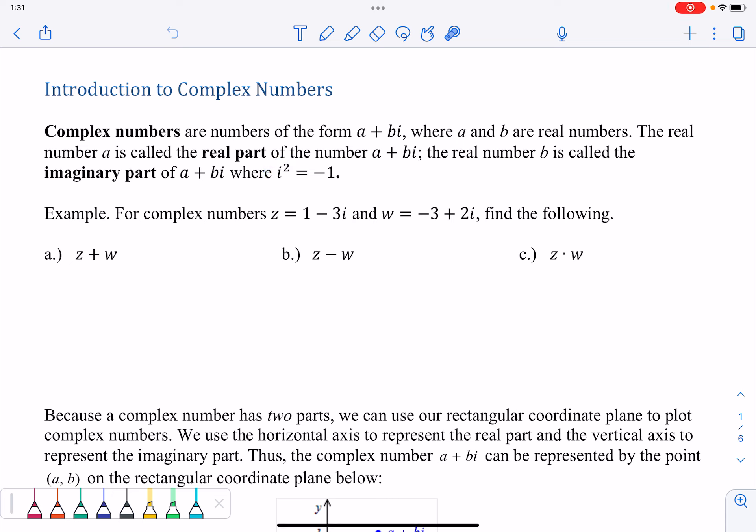So, example. For complex numbers Z equals 1 minus 3I and W equals negative 3 plus 2I, find the following: Z plus W, Z minus W, and Z times W.